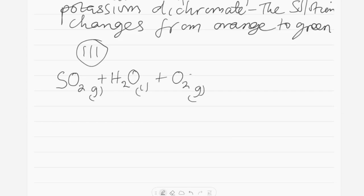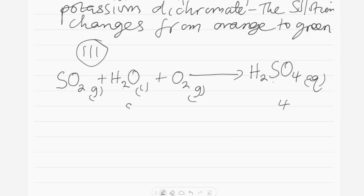The sulfur dioxide gas is reacted with water and oxygen gas. When these two react, we form acid rain, which is H2SO4 aqueous. So the equation is not balanced. There is one sulfur atom on each side, two hydrogen atoms on each side. But the oxygen atoms: on this side we have four, and on the other side we have five.